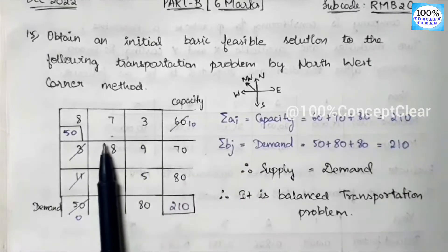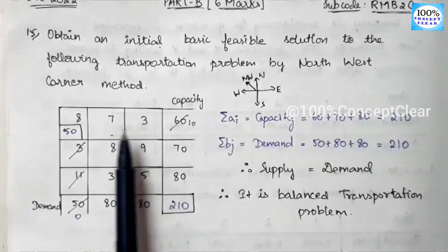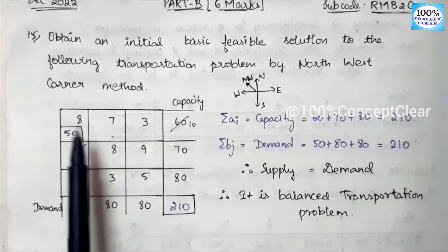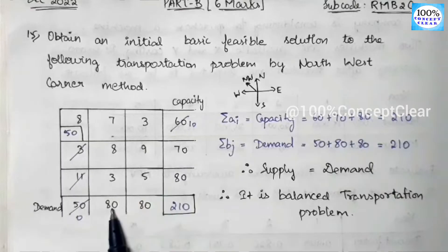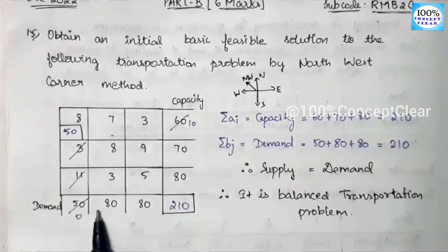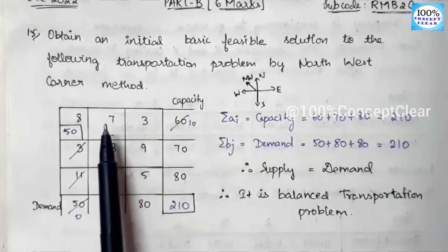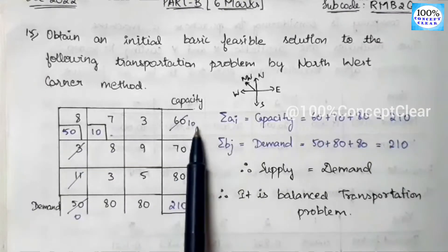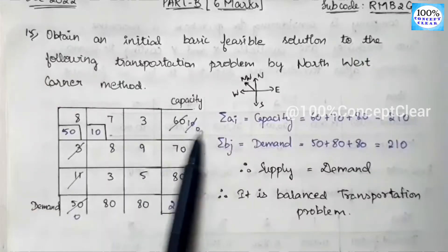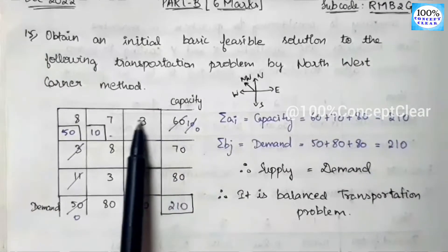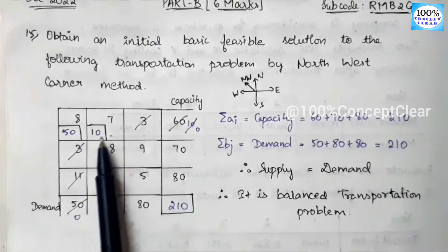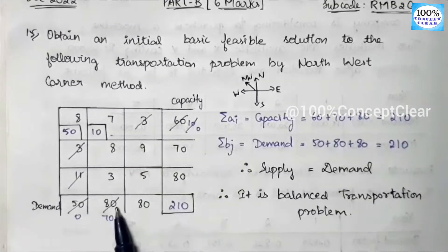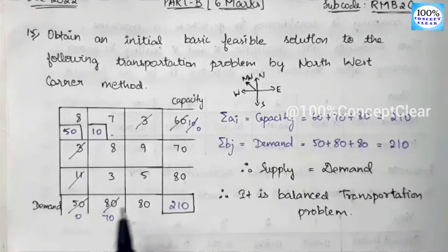For the second allocation, we again find the north-west corner of the remaining table. Among the values 7, 3, 8, 9, and 3, 5, the north-west corner is 7. Supply is 10 and demand is 80; the least value is 10, so we allocate 10 to the cell with cost 7. Supply becomes 0, so we cancel that row. Demand: 80 minus 10 equals 70. Two allocations are done.